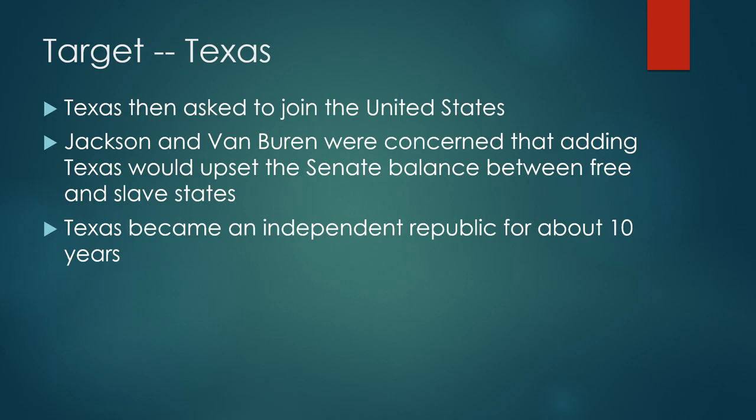Texas then sought to join the United States as a slave state, but Andrew Jackson and then Martin Van Buren were concerned that adding Texas would upset the balance in the Senate between free and slave states. It would cause all kinds of sectional problems. So Texas ended up becoming an independent republic on its own for about 10 years — that's why it's known as the Lone Star Republic.